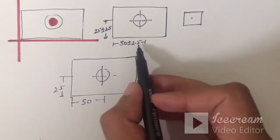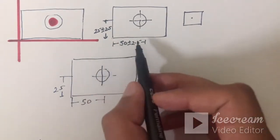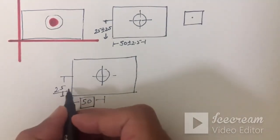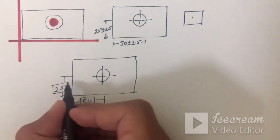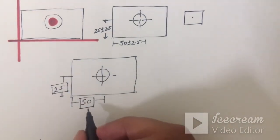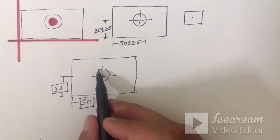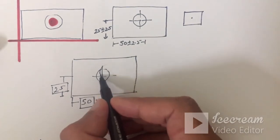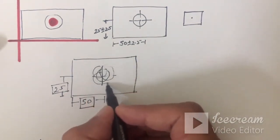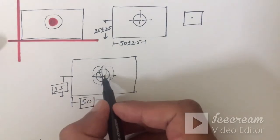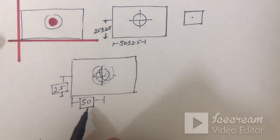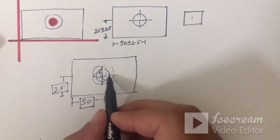Instead of defining plus and minus tolerance on these dimensions, I will keep these dimensions as basic dimensions and create a box around them. These dimensions are basic dimensions, and during manufacturing there will be no defect in these dimensions. Obviously during manufacturing there will be some defect and this hole will not come at exactly 50 mm — it can be drilled off position. We need to define some tolerance on where this hole will be drilled, so I will create a feature control frame for this hole.